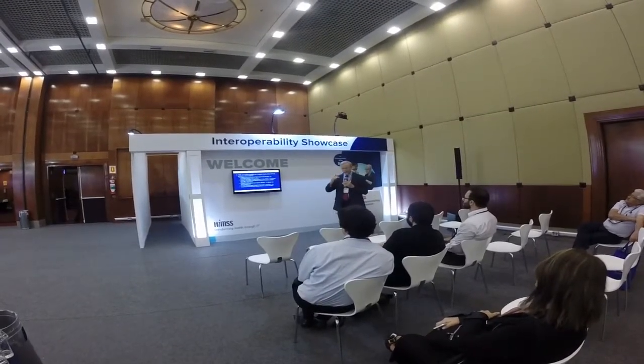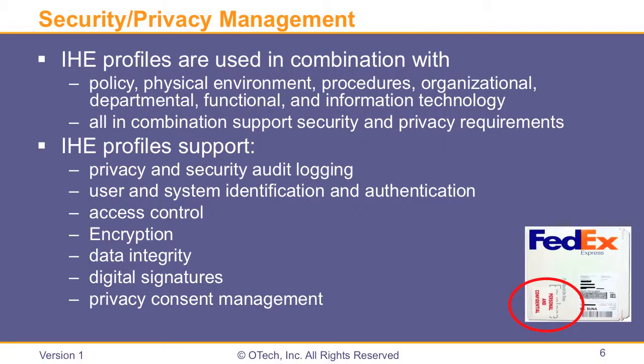The next set of profiles deals with security and privacy management. These are profiles used in combination with policies — for example, who can access what information — with the physical environment such as bridges, gateways, DMZs, with procedures, with organizational and departmental functions, and with what is technically available. All of these in combination support security and privacy requirements. These IHE profiles support logging of privacy and security information, so anytime a transaction takes place, it will be logged in a standard way and accessible later to find out who accessed what information and for what reason.